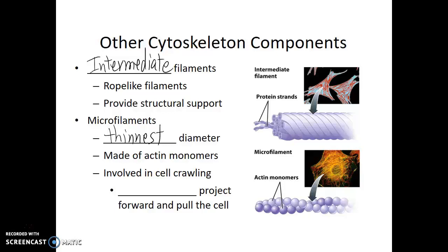If the cell moves its plasma membrane — whether to crawl or even just to surround a food particle — the extensions of that plasma membrane are known as pseudopods. The formation of pseudopods is the result of the microfilaments. Pseudopods project forward and pull the cell. This is how an amoeba moves.